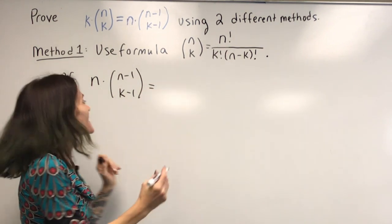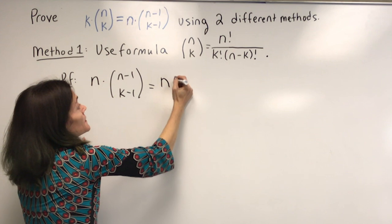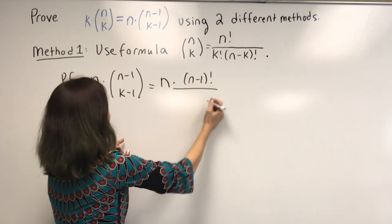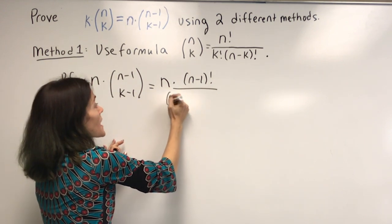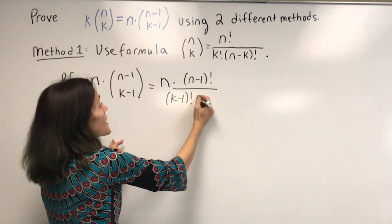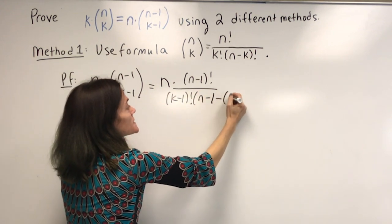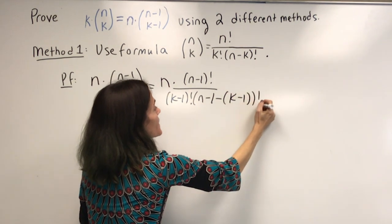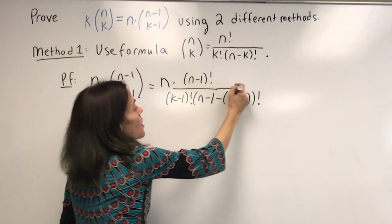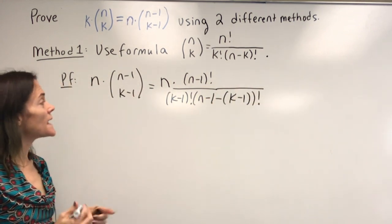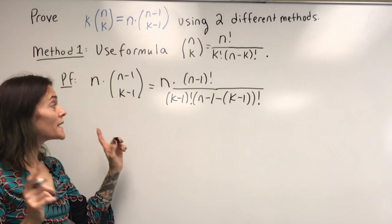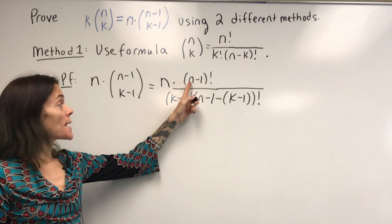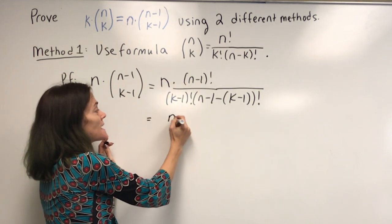I'm allowed to use this formula, so I expand: n times n minus 1 factorial divided by k minus 1 factorial times n minus 1 minus k minus 1 factorial — all in the denominator. Now we need to do some simplification. If you take n times n minus 1 factorial, this is n factorial.